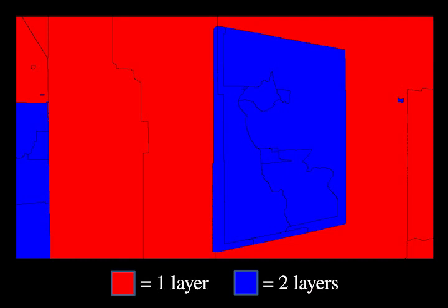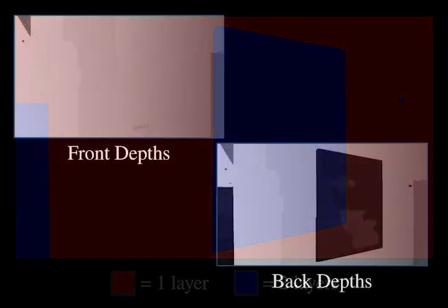In this image, the blue pixels indicate reflective regions that are represented by two layers. These two depth maps show the depths of the front and rear layers respectively.